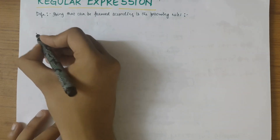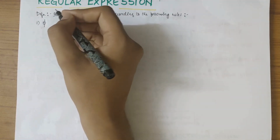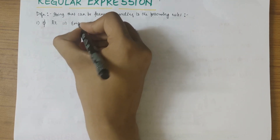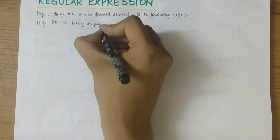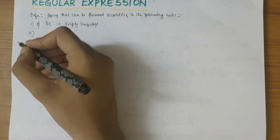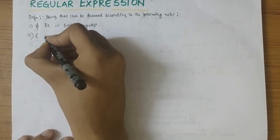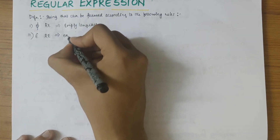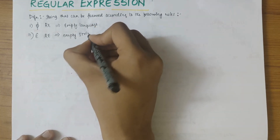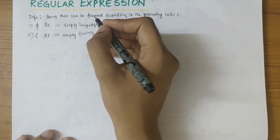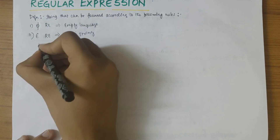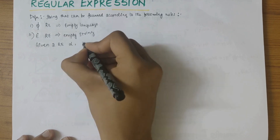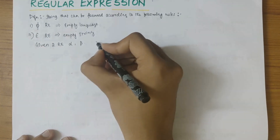The first rule says that phi (∅) is a regular expression denoting the empty language. Epsilon is also a regular expression denoting the language containing the empty string. Next, given two regular expressions alpha and beta, the product of those two is considered a regular expression.